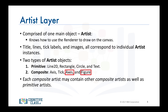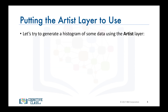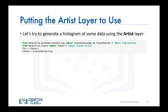Now let's put the artist layer to use and see how we can use it to generate a graphic. Let's try to generate a histogram of 10,000 random numbers using the artist layer. First, we import the FigureCanvas from the backend — backend_agg — and attach the figure artist to it. Note that agg stands for anti-grain geometry, which is a high-performance library that produces attractive images.